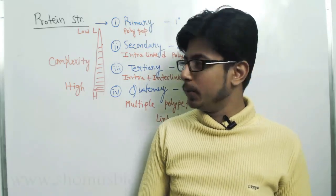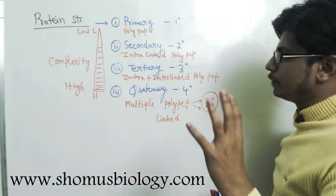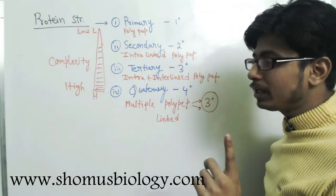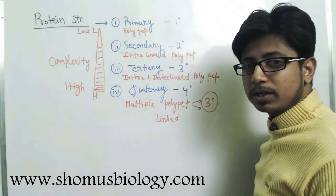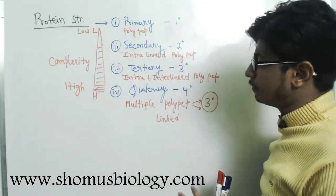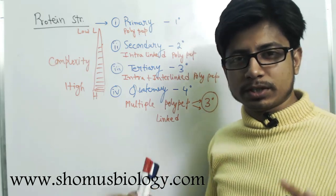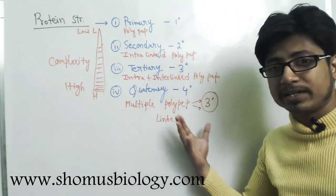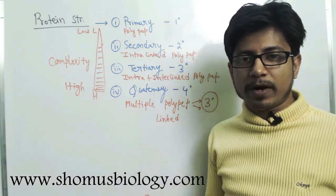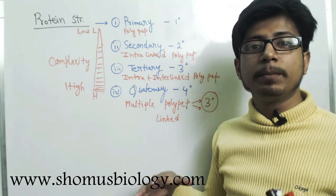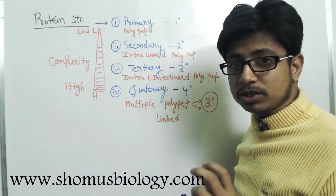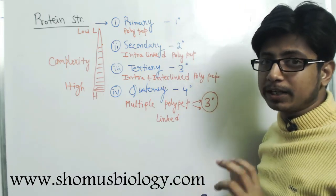In the last video we talked about the protein structure hierarchy — it starts with primary structure, which is converted to secondary, then secondary is converted to tertiary, and multiple tertiary structures link together to make a quaternary structure. Tertiary and quaternary structures can provide the actual functional form of the protein, but secondary and primary structures alone are not enough for complete protein functionality.